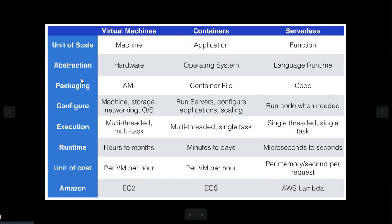Now let's talk about the abstraction level. For the virtual machine, we abstract the hardware. In the container, we abstract the operating system — Linux and Windows. When you look at the core, the container and the machine's information relate to the storage of the machine.